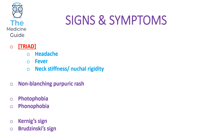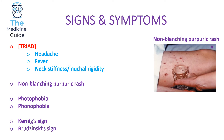Another classic finding is a non-blanching purpuric rash. This should immediately raise alarm bells and make you suspicious of a potential meningococcal septicaemia. This is an example of a purpuric or petechial rash which persists despite a glass being pressed against it — you can see the glass pressed against the patient's leg and the rash is still persisting, so the rash hasn't faded.